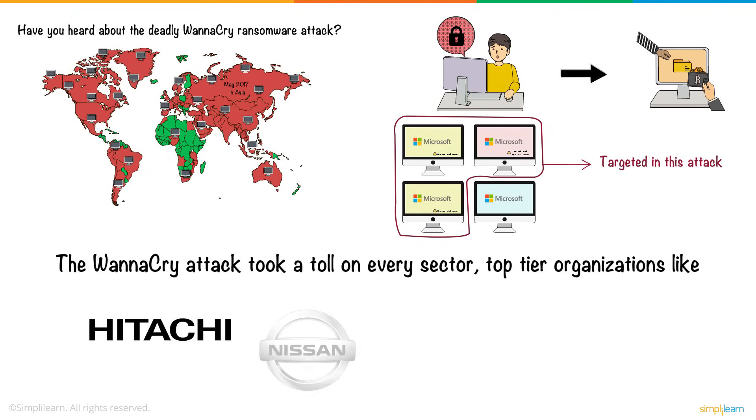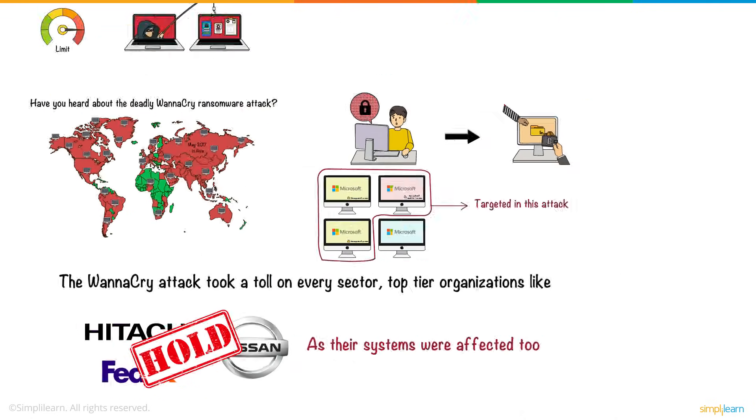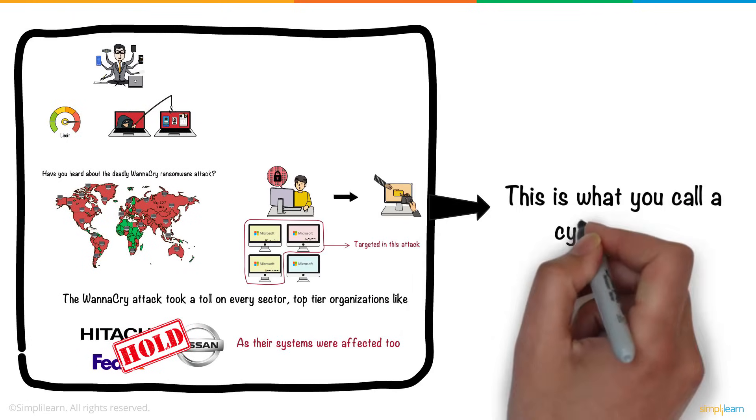Top-tier organizations like Hitachi, Nissan, and FedEx had to put their businesses on hold, as their systems were affected too. Now, this is what you call a cyber attack.